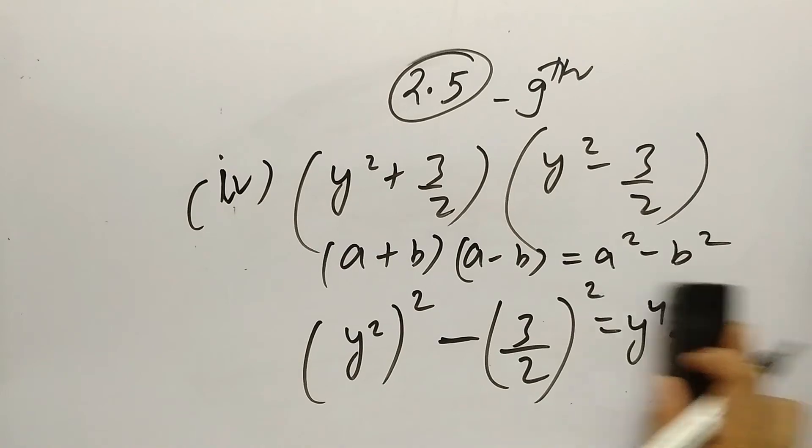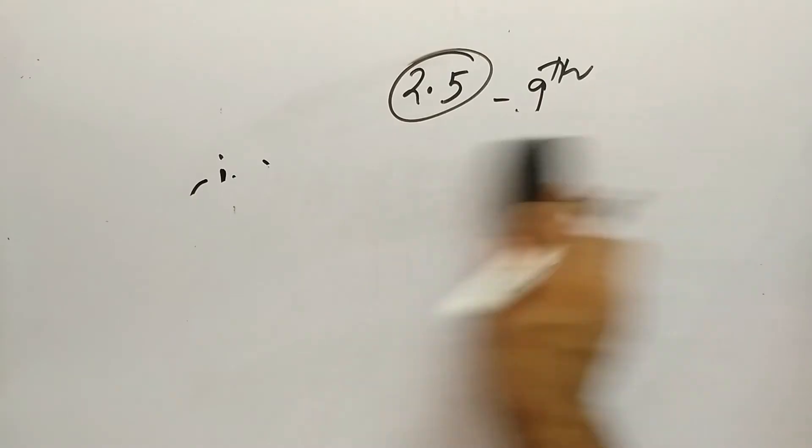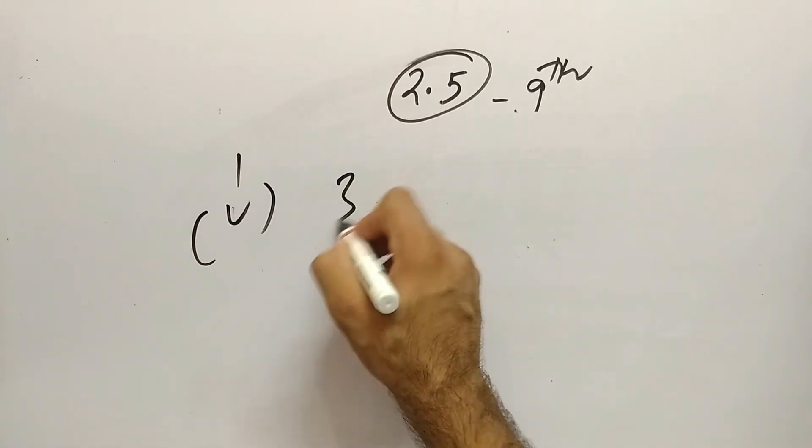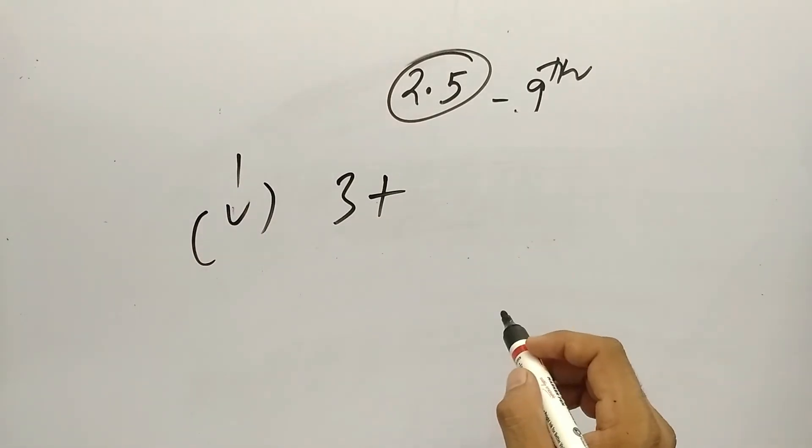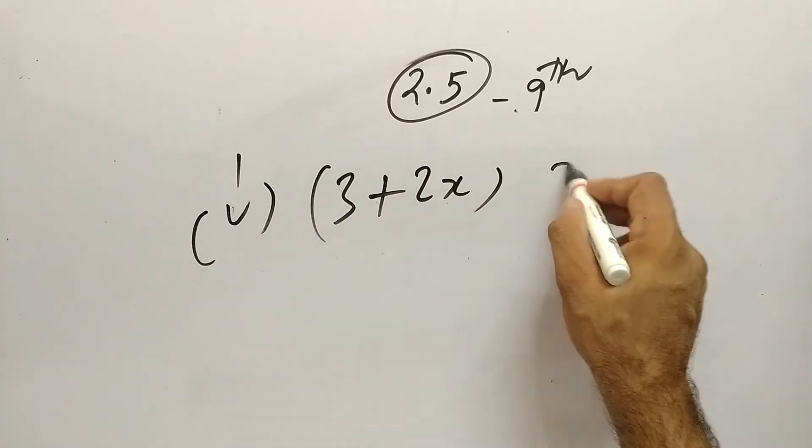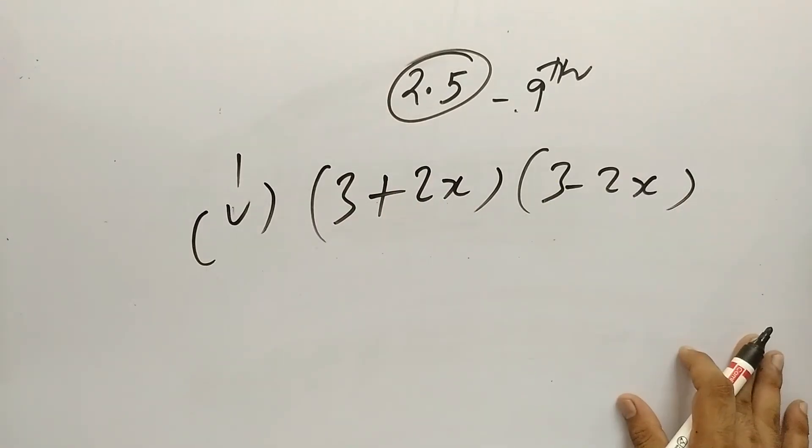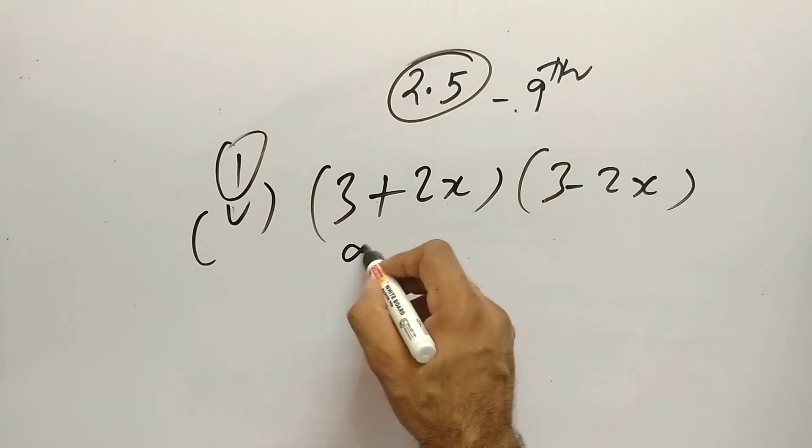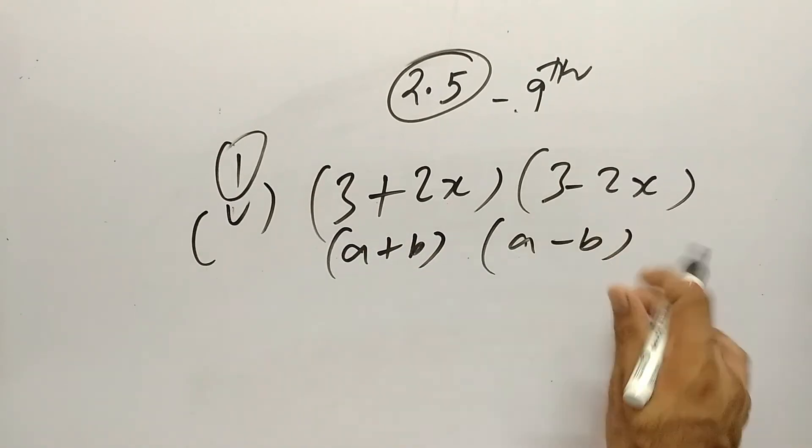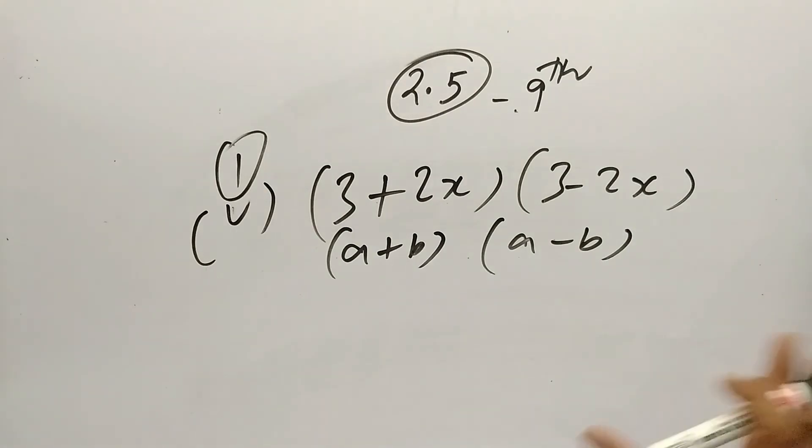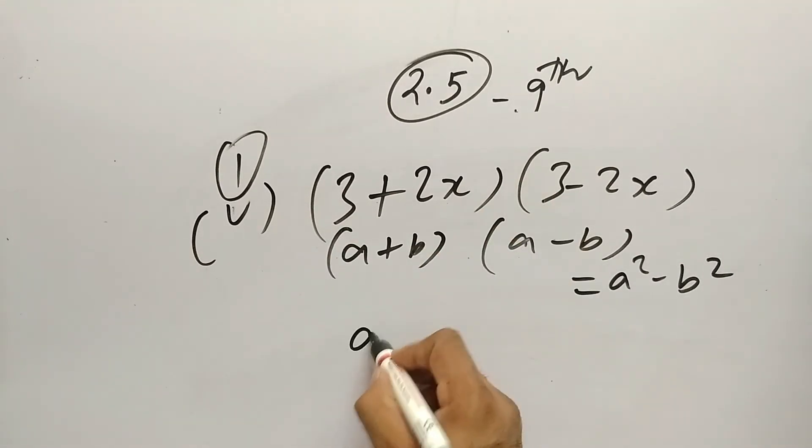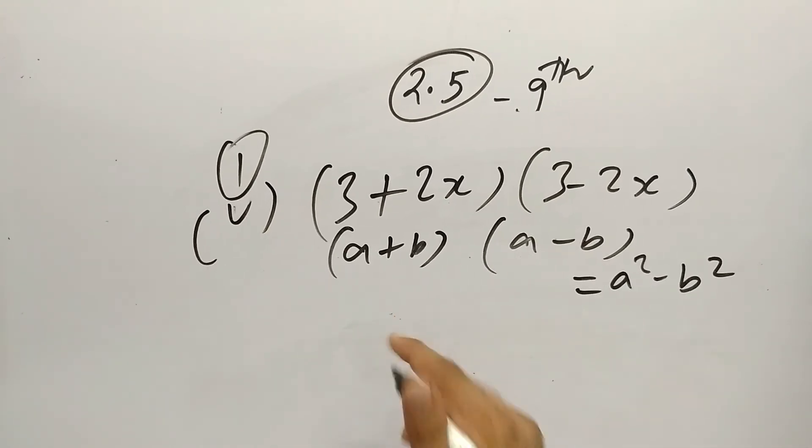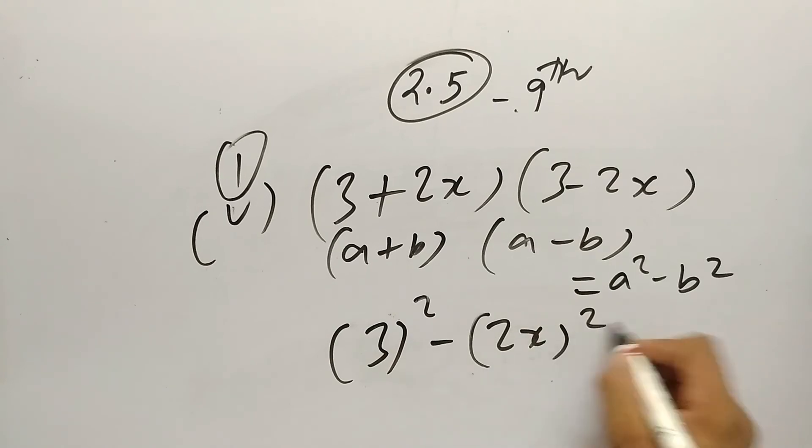The fifth question is (3+2x)(3-2x). Which identity will we use? Again, (a+b)(a-b). We can write this term first or this one first, that doesn't matter. So the property of (a+b)(a-b) is a² - b². So 3 squared minus 2x whole squared. a² - b² it becomes. So 3 squared minus 2x whole squared. I'm solving this step by step.